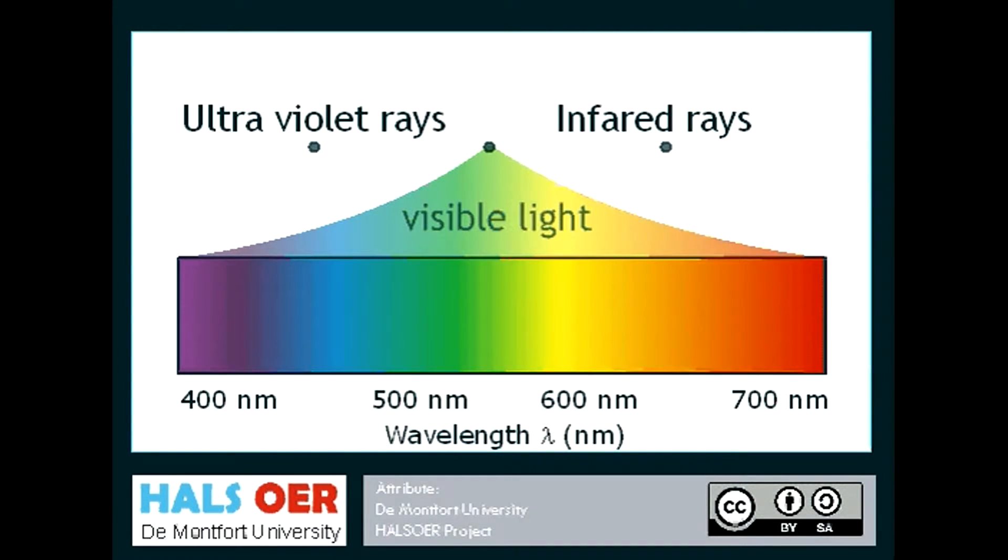Colors that we see are the colors reflected by objects, not those that are absorbed. Therefore, leaves on trees appear green because they reflect green light, and hemoglobin appears red because it's reflecting red light.